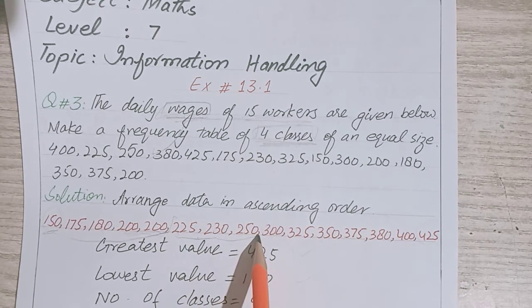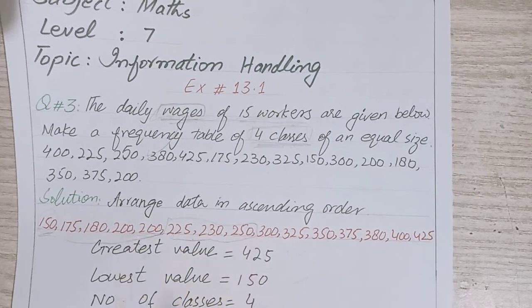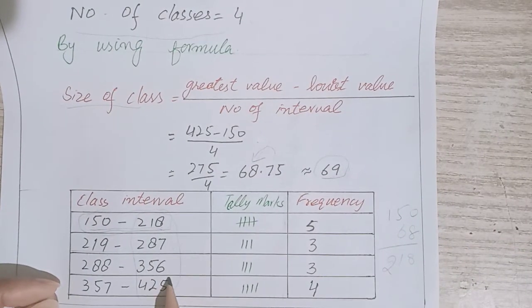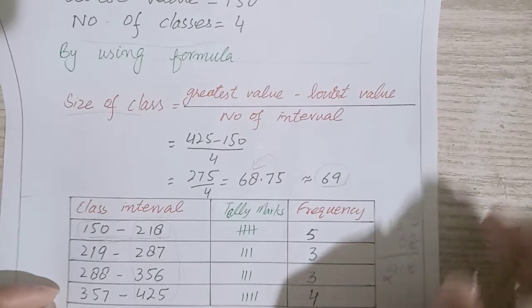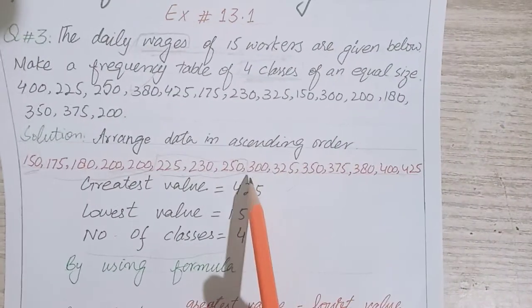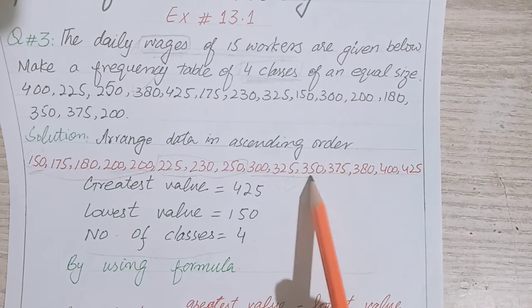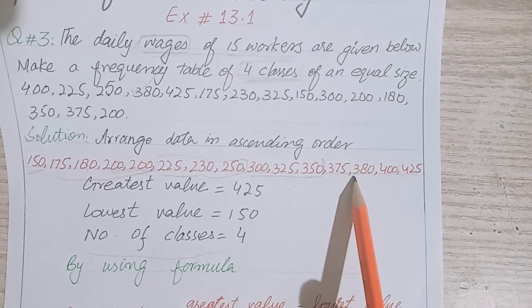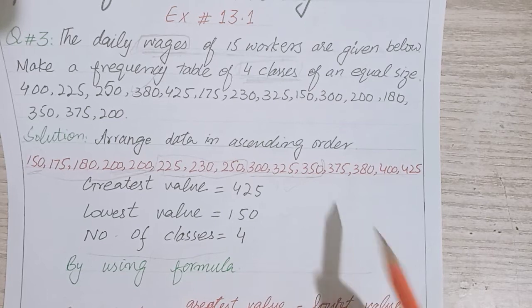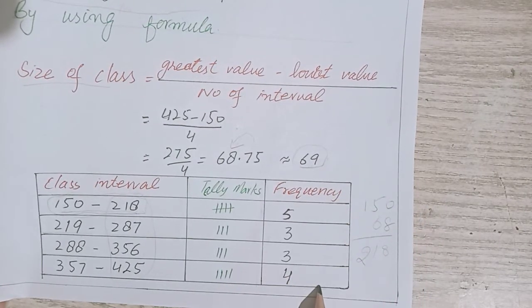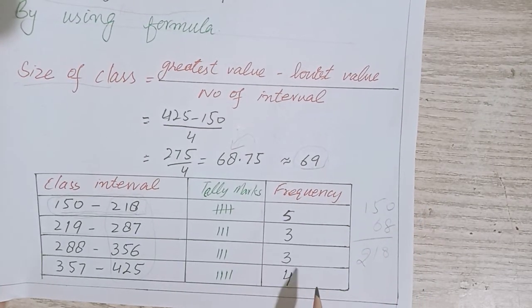For 219 to 287, we have three values. Next is 288 to 356 - checking those values, we also have three. The remaining four values fall in the last class. You can see here, this is your complete frequency table for the required question.